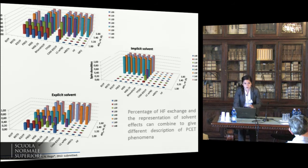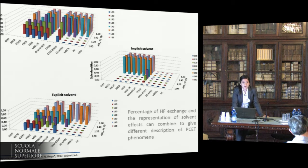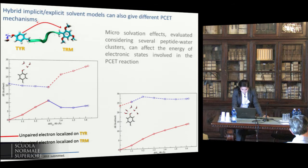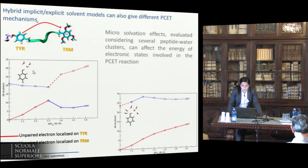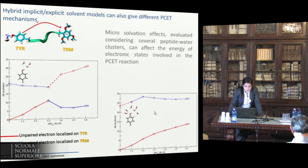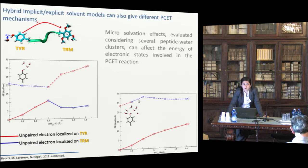To perform a calculation regarding a very complex reaction like PCET, a calibration of the methods is necessary as a first step. Here I want to present the situation in which a hybrid implicit and explicit solvent is taken into consideration. We have our peptide with some water molecules represented explicitly and an implicit solvent surrounding. We can see that going from a lower number of water molecules solvating the tyrosine residue, to observe the electron transfer it is necessary to also take excited states into consideration.